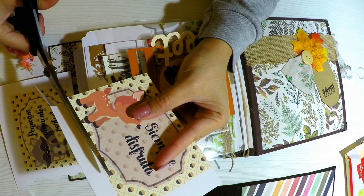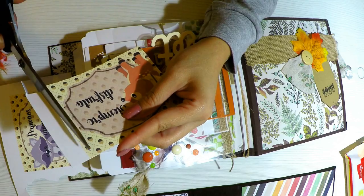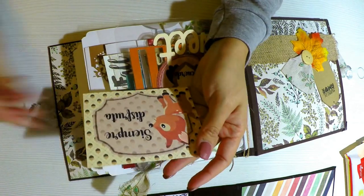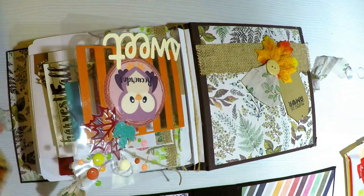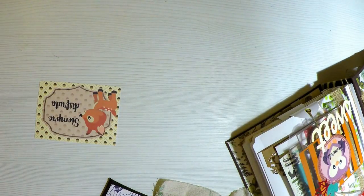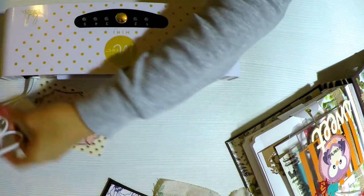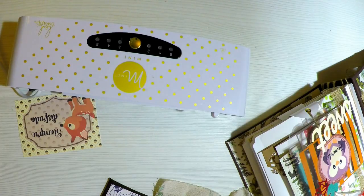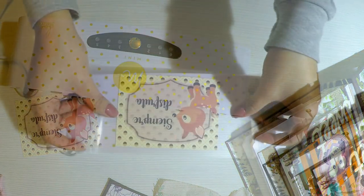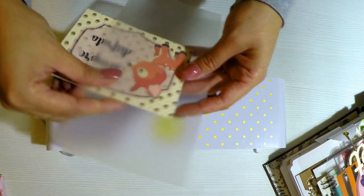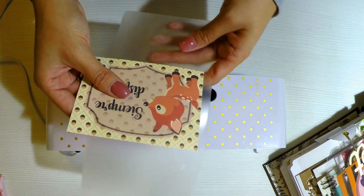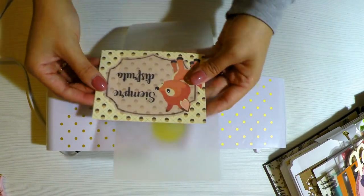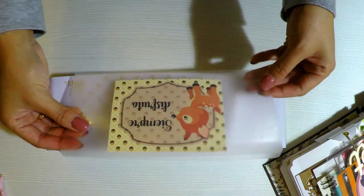Vamos a hacer para que vean cómo se hace la parte más original de este álbum que es este estilo de acetato o de transparencia que le vamos a agregar toda la decoración que queramos. Yo la he hecho con la maquinita de la Mint. La Mint que es de Heidi Swapp y es una maquinita que lo que hace es plastificar. Esto es lo que llamamos nosotros la Mint para foil.